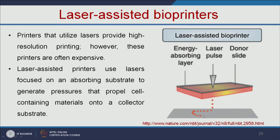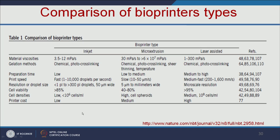The comparison of bioprinter types shows that the selection depends on the organ you want to print and the material, and each has its own advantages and disadvantages. For cell viability, laser-assisted bioprinters perform best. For printing speed, inkjet printers are fastest compared to the other two types. For printer cost, inkjet is low, micro-extrusion is medium, and laser-assisted is very high. You must select the bioprinter according to the type of organ you want to print.